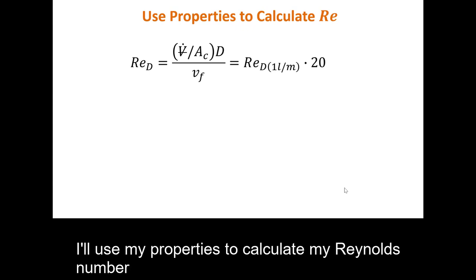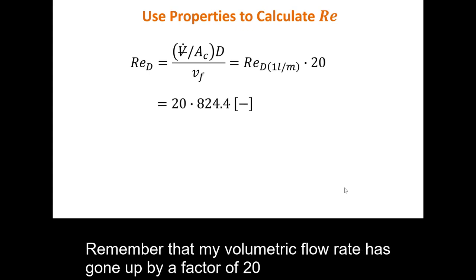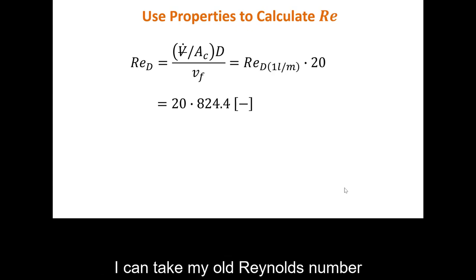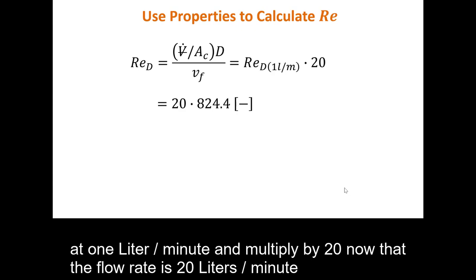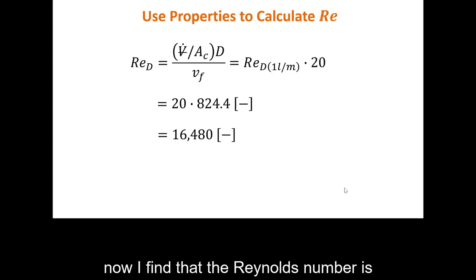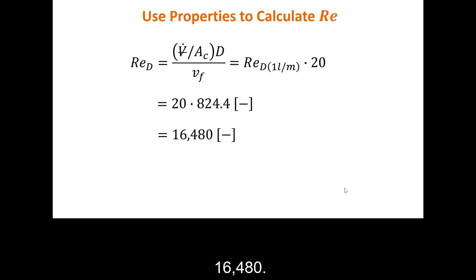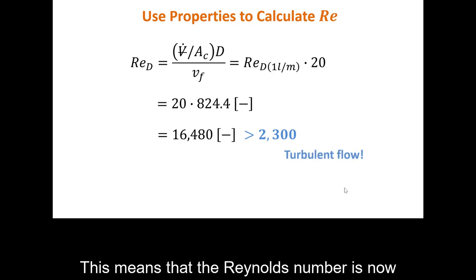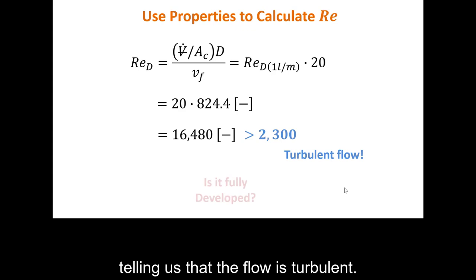I use the same fluid properties to calculate the new Reynolds number. Since the volumetric flow rate increased by a factor of 20, I can simply multiply the previous Reynolds number of 824.4 by 20, giving a new Reynolds number of 16,480. This tells us that the flow is now turbulent.